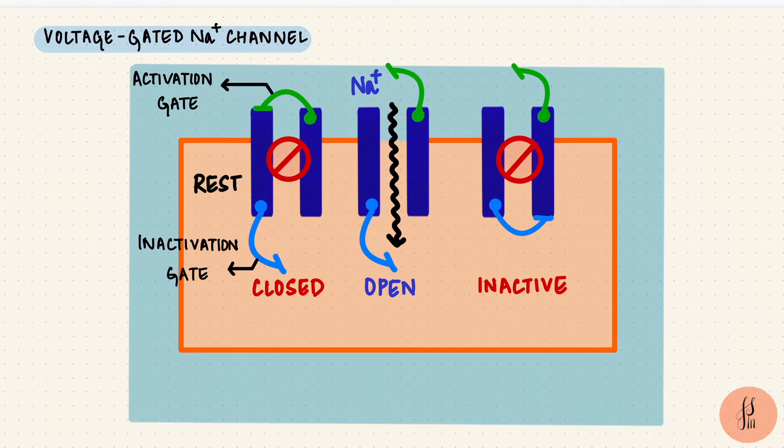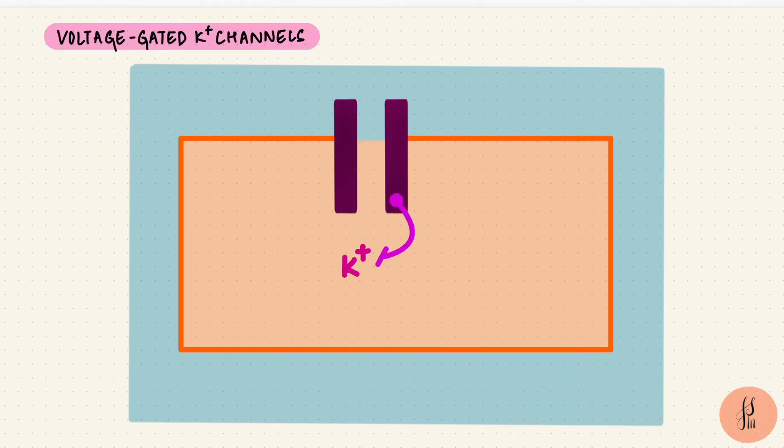Only channels from the closed state can be opened, so the inactivated channels have to come back to the closed state before they can open again. The voltage-gated potassium channel just has one gate that opens and closes.